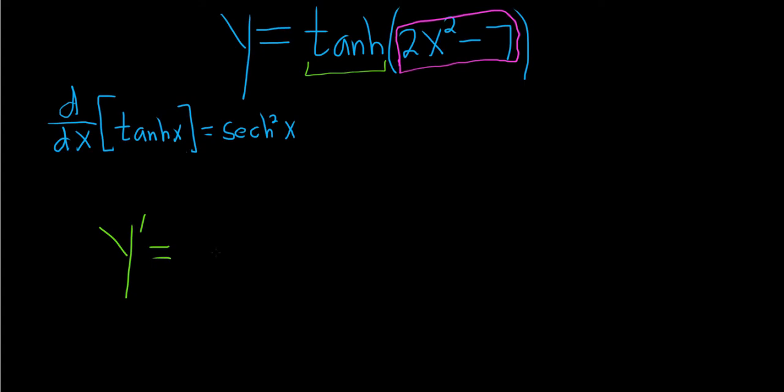So the outside function is tanh, so its derivative is the hyperbolic secant squared of the inside stuff, so 2x squared minus 7, times the derivative of the inside stuff.